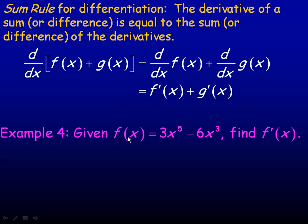So in example four, if we're given that f(x) is 3x⁵ - 6x³, so there's the two different functions. Then to find f'(x), we just differentiate each individual part. So the derivative of 3x⁵, the 5 comes down in front, 5 times 3 is 15. Subtract 1 from 5 to give you exponent 4.